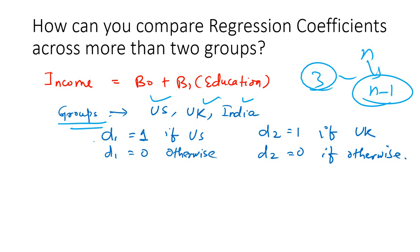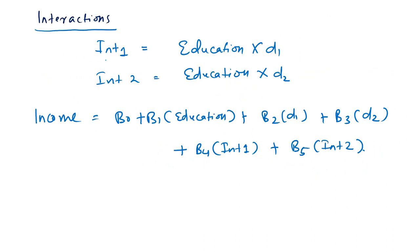We define D1 as 1 if the observation is from the US and 0 otherwise — whether UK or India, it must be 0 if it is not US. Similarly, we define D2 as 1 if the observation is from the UK and 0 otherwise. So we have two dummy variables, and accordingly we will have two interaction variables: interaction 1 = education × D1, and interaction 2 = education × D2.